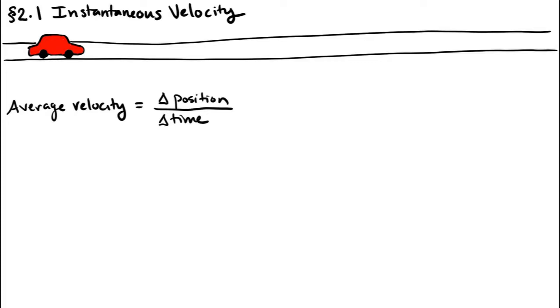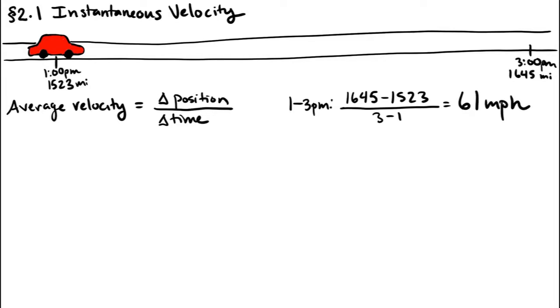Suppose you were driving down the highway and you glanced at your odometer at 1 o'clock and saw it read 1523, then you glanced at it again at 3 o'clock and saw it read 1645. Then your average velocity for these two hours would come out to be 61 miles per hour. You probably weren't going 61 miles per hour the entire time; probably sometimes you were going a little faster, sometimes a little slower.